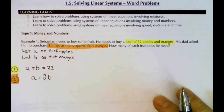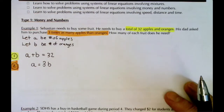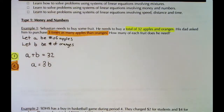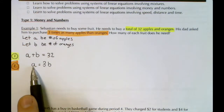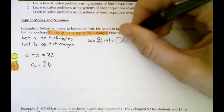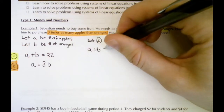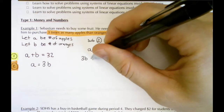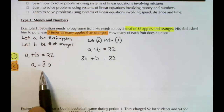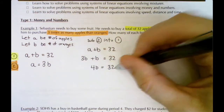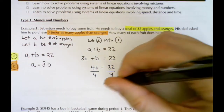Once you have the system of equations, the hardest part is done — now just use substitution or elimination. This is set up nicely for substitution because equation two already has A isolated. Substituting A = 3B into equation one: 3B + B = 32, so 4B = 32, and dividing both sides by 4 gives B = 8.